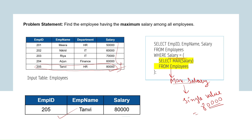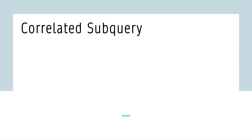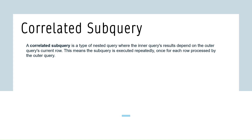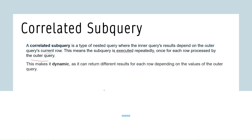The second type is the correlated subquery. A correlated subquery depends on the outer query for its values — it is evaluated once per row of the outer query and references a column from the outer query. Key characteristics: it follows row-by-row evaluation, is dynamically dependent on the outer query, and is used for complex filtering.